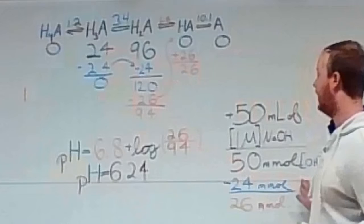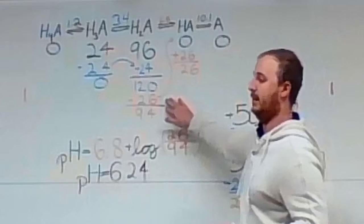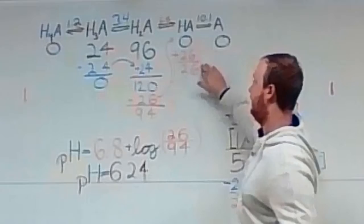So after subtracting up 24 millimoles of OH- used to eradicate the H3A, it gives us 26 millimoles of OH- to deprotonate H2A into HA. So, after taking up 26 millimoles, when it gives us 94 millimoles of H2A and 26 millimoles of the deprotonated HA.